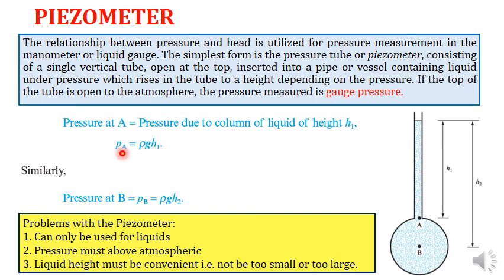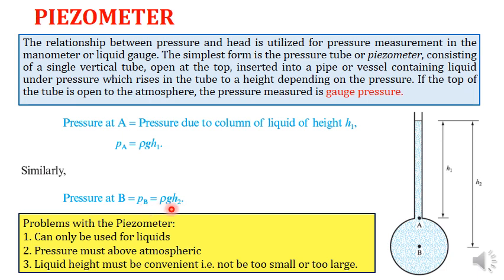Similarly, if another point within the vessel is point B, and you are interested in measuring the pressure at point B, you need the pressure head — the depth h₂ from the top surface of the liquid to point B. Then P_B = ρgh₂. You simply replace the height with the corresponding depth at the point where pressure is being measured.